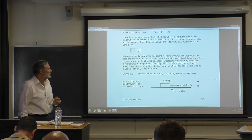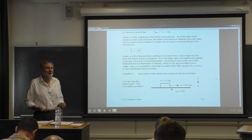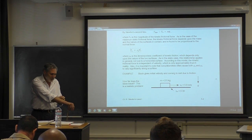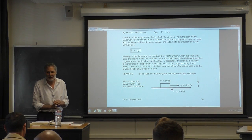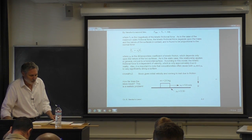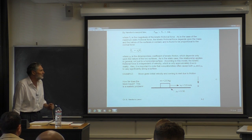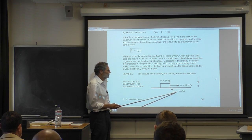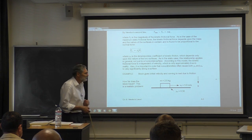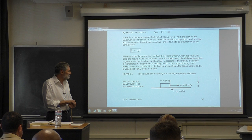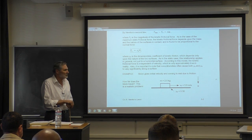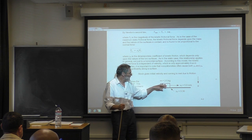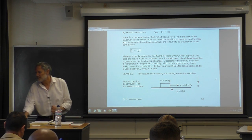Now we can solve the Aristotle problem: objects given some initial velocity always come to rest. Due to our idealized approach we neglected friction, but now we've got it back in. Let's say we have a two-kilogram block on a horizontal surface, the coefficient of kinetic friction is 0.30, and we give it an initial velocity of five meters per second. It's going to come to rest. We can now calculate how far it travels.